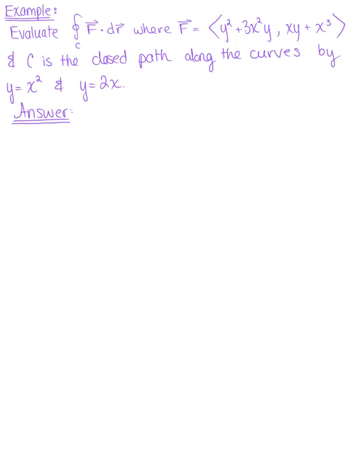Evaluate the vector line integral over the closed curve C, where the vector field F is defined by the components Y squared plus 3X squared Y, and XY plus X cubed. C is the closed path along the curves defined by the parabola Y equals X squared and the line Y equals 2X.